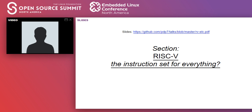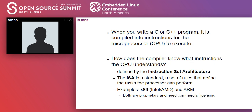RISC-V — is it the instruction set for everything? When you write a C or C++ program, it gets compiled into instructions that the processor executes. But how does the compiler know what instructions the CPU understands? This is defined by the Instruction Set Architecture, or ISA — a standard, a set of rules that define the tasks that the processor can perform.